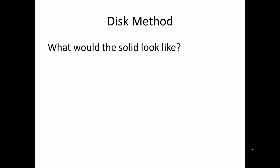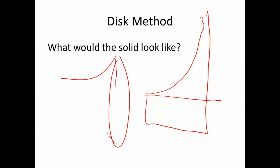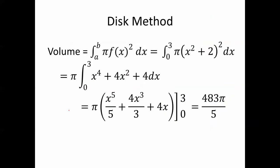What would the solid look like? The solid looks like this, while the region looks like this. If you revolve this about the x-axis, you end up with something that looks a little like a bullhorn. The volume is the integral from 0 to 3 of pi times x squared plus 2 squared dx. Multiply it out and pull the pi to the outside: pi times the integral from 0 to 3 of x to the 4th plus 4x squared plus 4 dx. Integrating gives pi times x to the 5th over 5 plus 4x cubed over 3 plus 4x, as x goes from 0 to 3. Plugging in the numbers, you end up with 483 pi over 5.